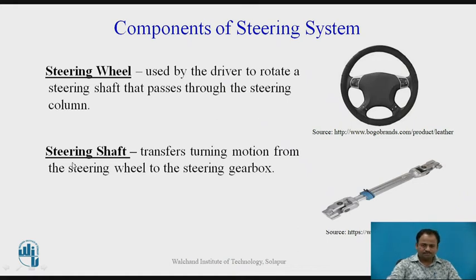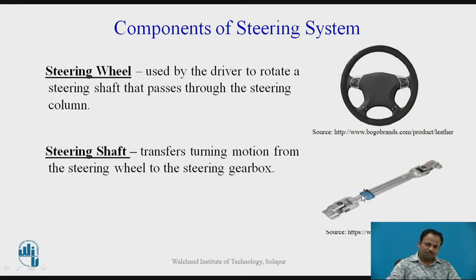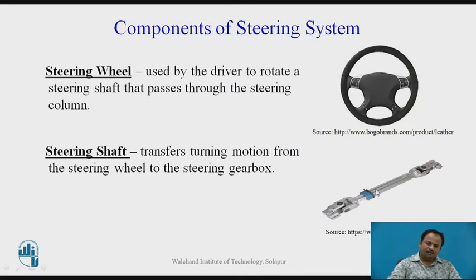Next is the steering shaft, which transfers turning motion from the steering wheel to the steering gearbox. It is a steel cylindrical shaft with a sliding joint. Whenever a vehicle encounters holes and bumps, this sliding joint changes the length of the steering shaft so that road shocks are not transmitted to the steering wheel and are absorbed by the shaft. Universal joints are provided at both ends of the steering shaft to transmit motion at the required angle to the steering gearbox.